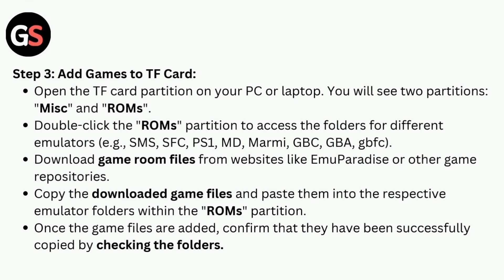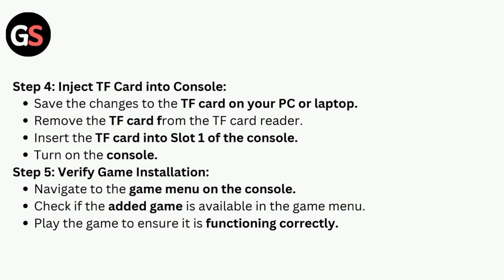Once the game files are added, confirm they have been successfully copied by checking the folders. Step 4: Insert the TF card into the console. Save the changes on your PC, remove the TF card from the reader, and insert the TF card into Slot 1 of the console, then turn on the console.